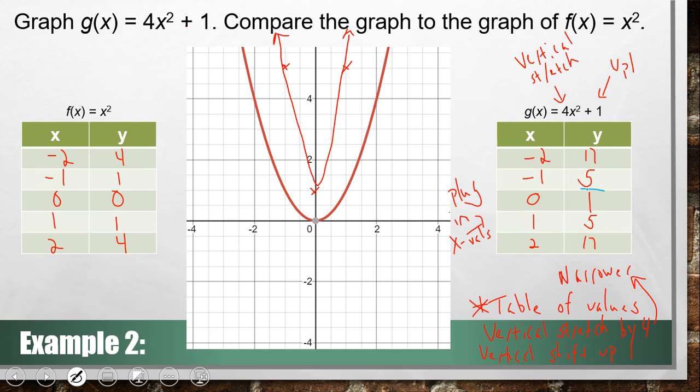My vertex is right there. And my axis of symmetry would be at x = 0. That's the imaginary line that goes there. So it does have the same axis of symmetry as my original graph.